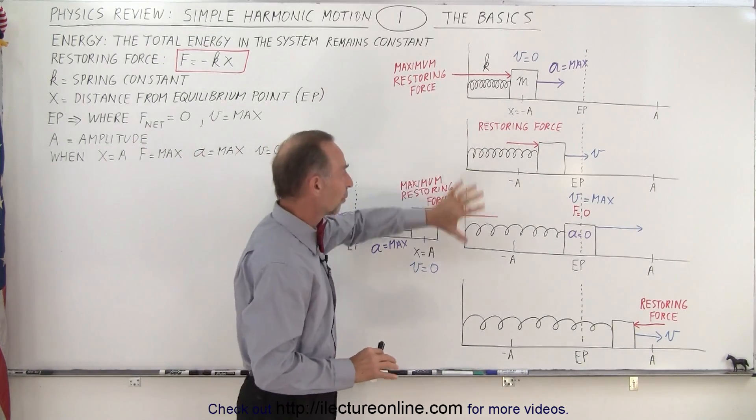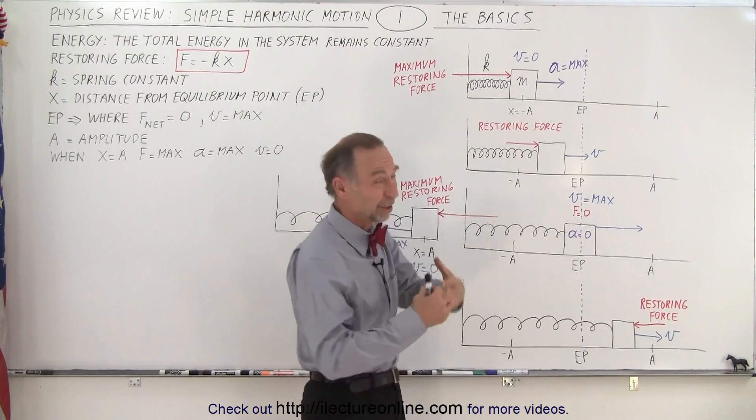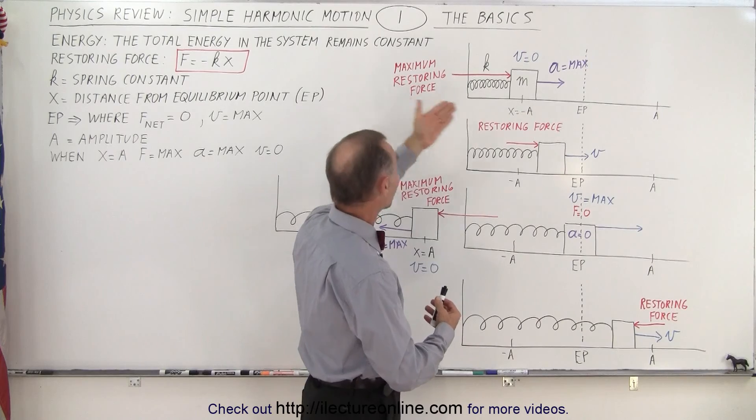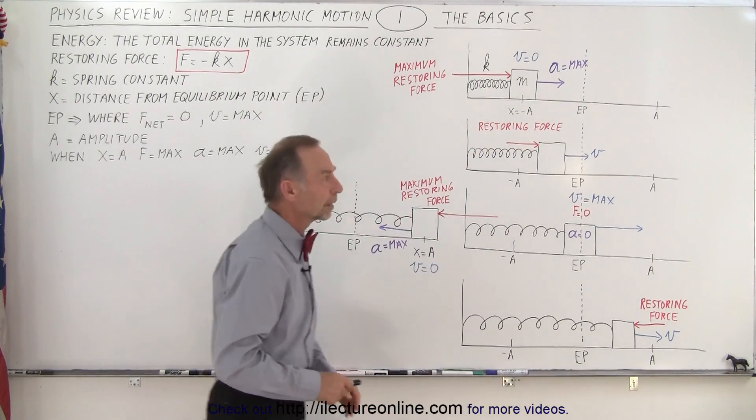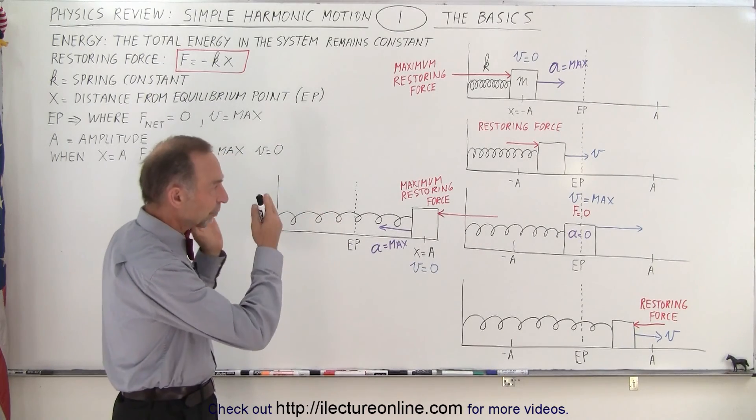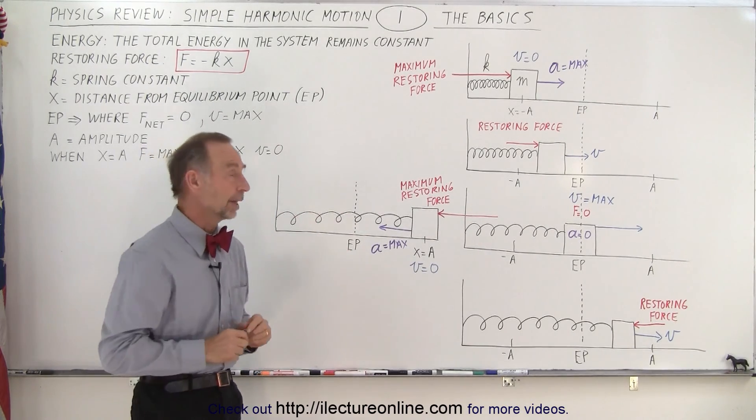So here we have five pictures where we see a mass which is attached to a spring, which the spring gives it the restoring force to try and put the mass back at the equilibrium point. We have five different pictures of five different situations within the motion so we can understand it better.